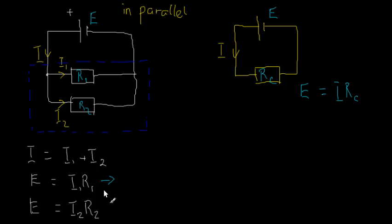We want to eliminate the I1 and I2. The first step is to get rid of I1 and I2 from these three equations. Let me start by rearranging this to make I1 the subject because then I can substitute the expression into that. So I1, if I move R1 over to the other side, I'll get E over R1. And I2 is E over R2.